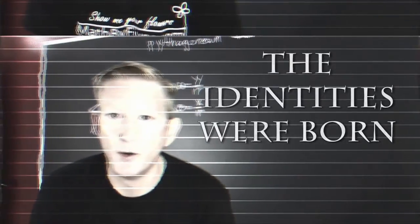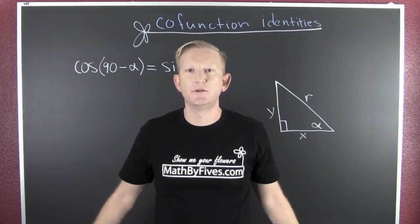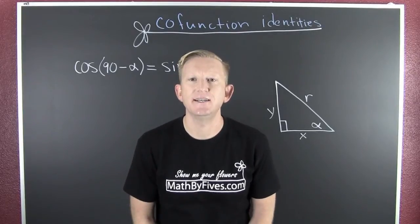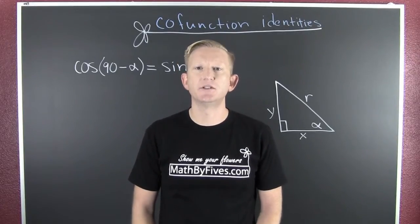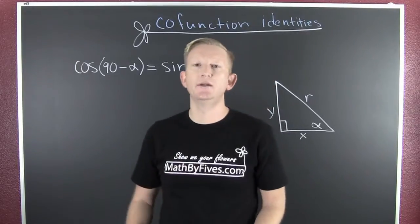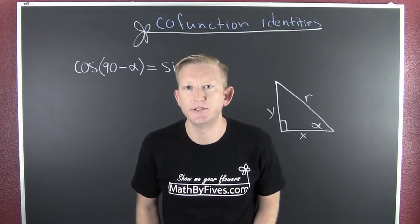And this is where the identities were born. Alright people, this is the proof of the co-function identity for cosine when we're using a right triangle to do it.